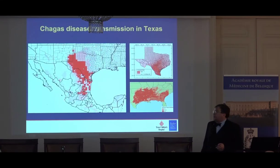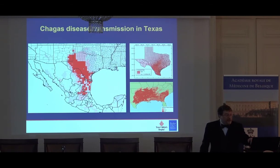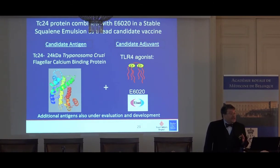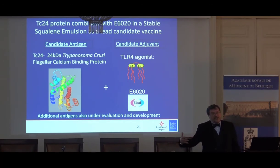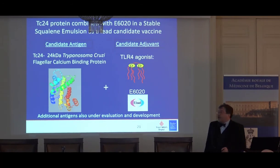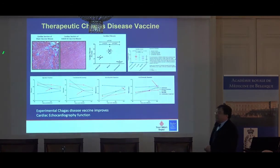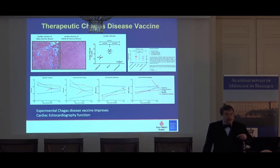We're also looking at Chagas disease transmission in Texas, where maps show active transmission. We have a new vaccine for Chagas disease. The drug benznidazole, the major treatment, doesn't seem to reduce heart disease once it has started. So we've developed a novel vaccine with a recombinant protein and an adjuvant from Japanese company A-Sci, which has been shown to block the development of fibrosis linked to heart disease in Chagas disease — quite exciting, and it will go into clinical trials as well.